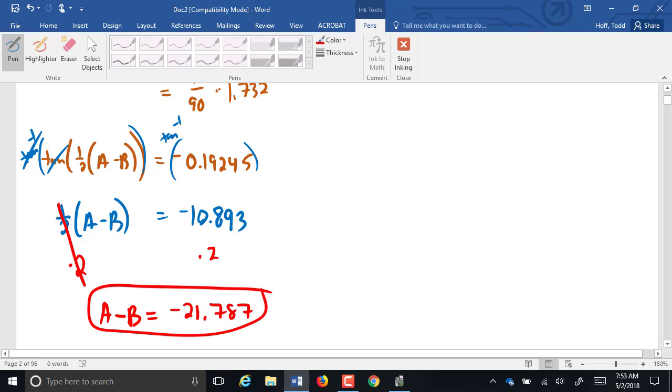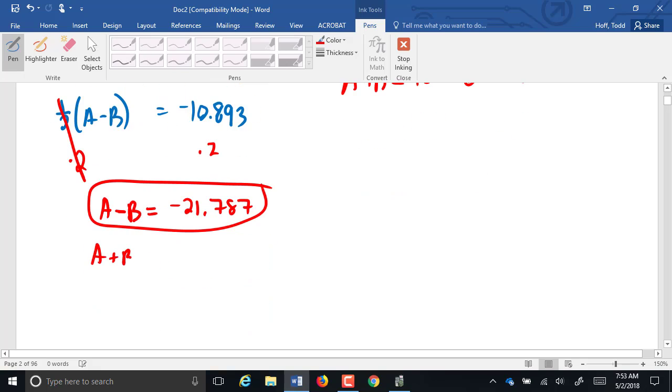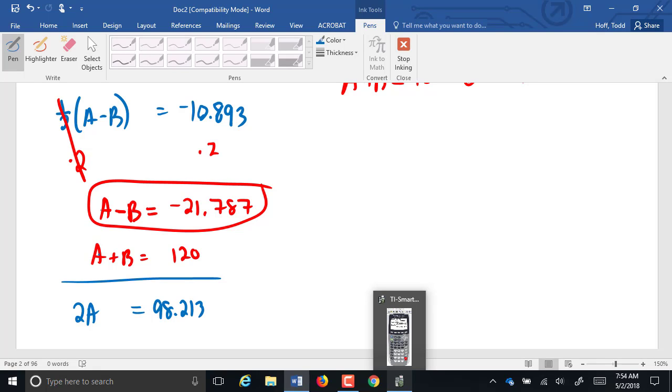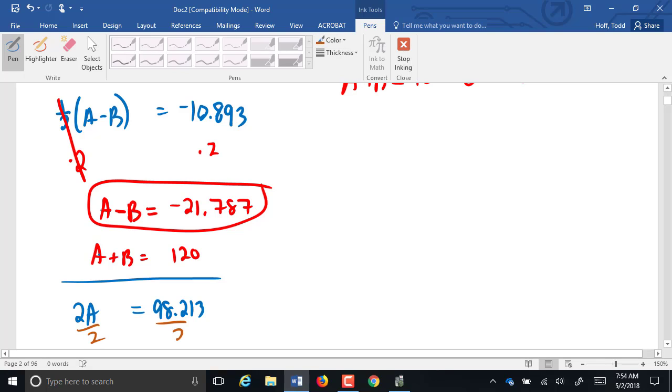That just tells us A minus B. We know that A plus B equals 180 minus C, which was 60, or 120. We can now do our elimination method. 2A equals 98.213. A is equal to 49.1065 degrees. B then could be found by subtracting that from 120, giving us 70.8935 degrees.